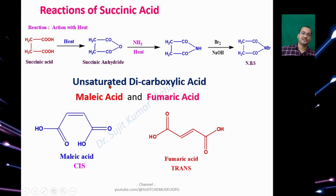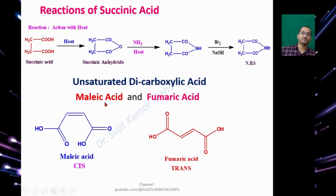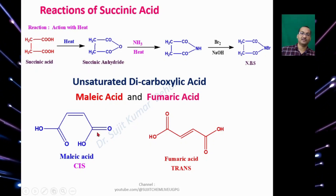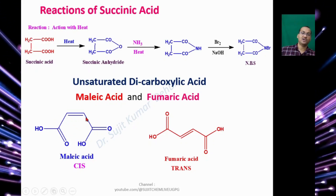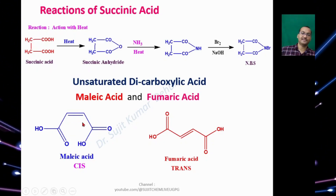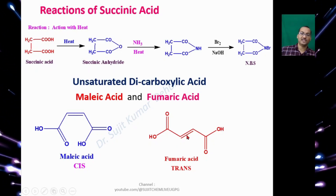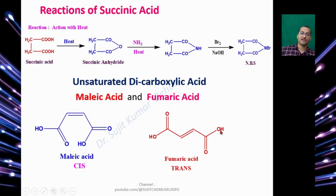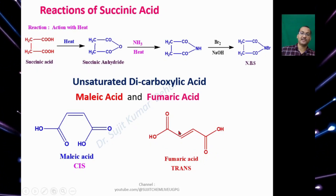The next is Unsaturated Dicarboxylic Acids. Two compounds are Maleic Acid and Fumaric Acid. Maleic Acid has a double bond with both carboxylic acid groups on the same side — the cis form is Maleic Acid. When both carboxylic acid groups are trans to each other with respect to the double bond, that is known as Fumaric Acid.